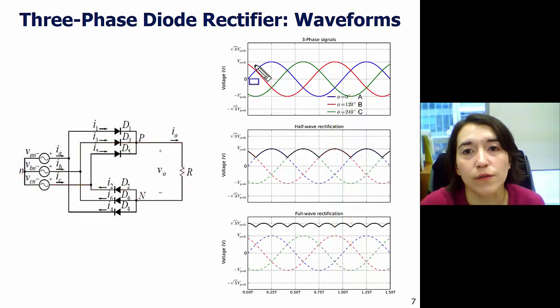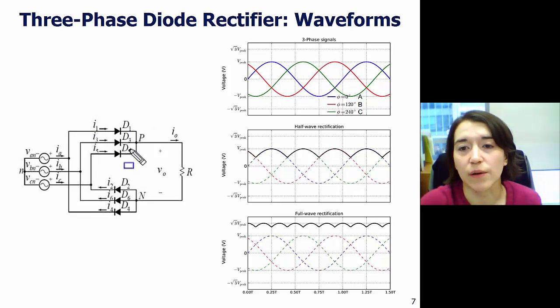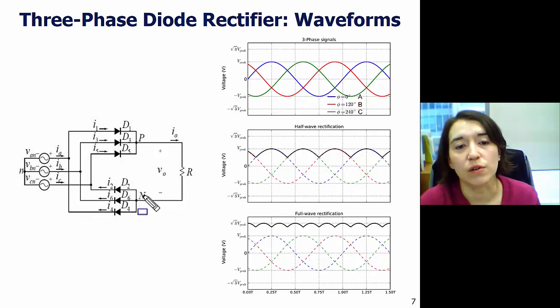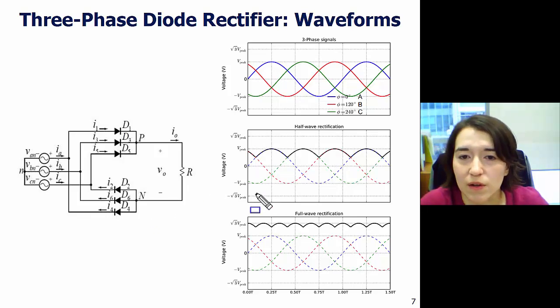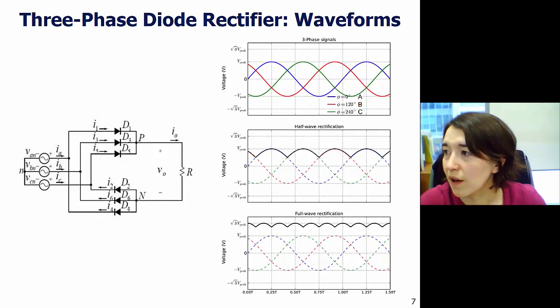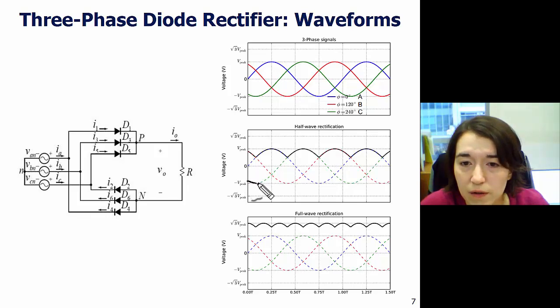So, after going through all of the six phases, we've seen that the top part, these three diodes, essentially make the highest voltage go through. And then, these three diodes make the most negative voltage be seen at the bottom side. In this picture, you can see the positive voltage is shown here. What they left out was actually the negative part, which is shown here. So, the negative is also followed here.